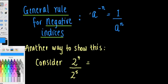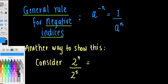This is the general rule: a base to the power of a negative, a to the power of negative n, is equal to 1 over that same base to the positive index. If we have this term and want to express it as a positive index, we're effectively moving it to the bottom of the fraction, with a 1 on the top — we're taking the reciprocal — and the index is now positive.